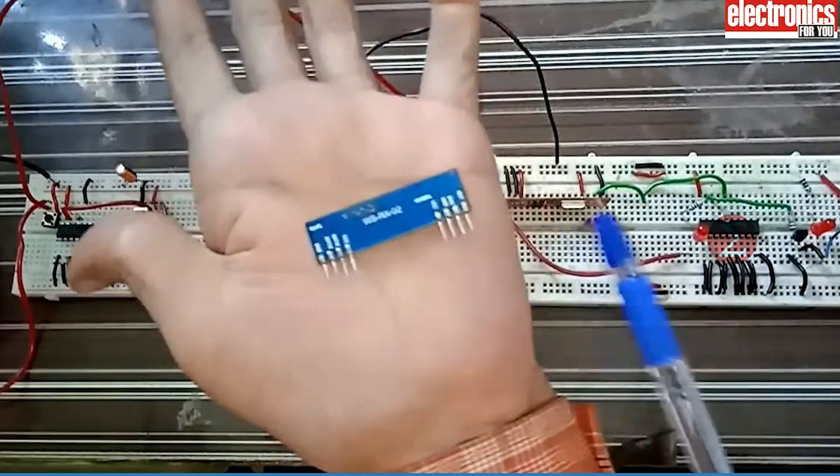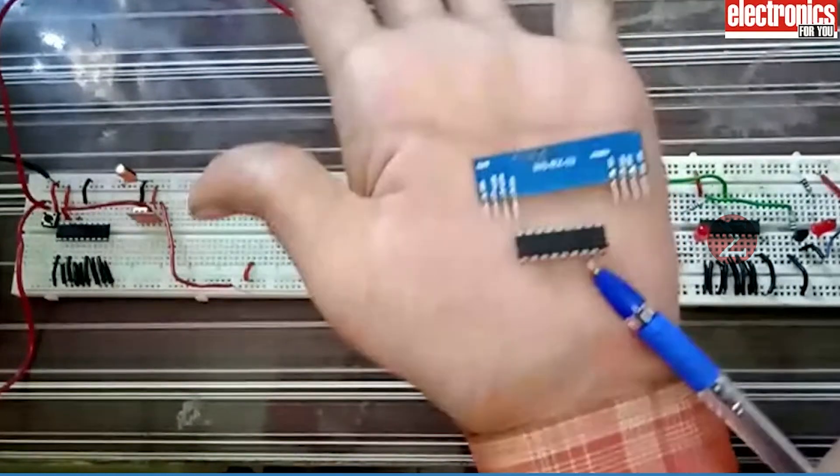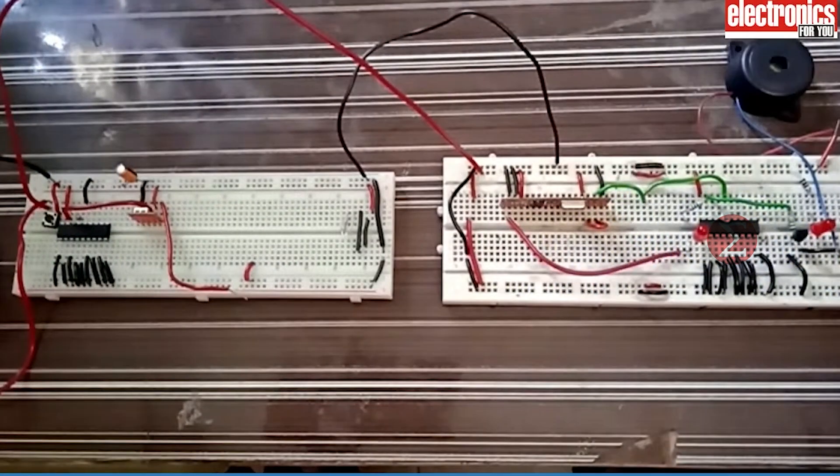This is the RF receiver module with 8 pins, and this is the decoder IC. This is our receiver circuit. Apart from this, LED and buzzer creates the complete receiver circuit.